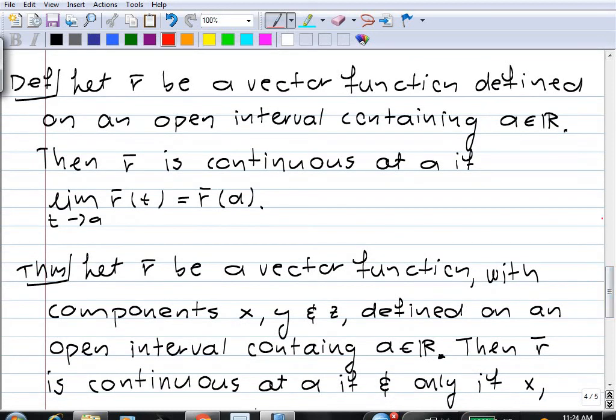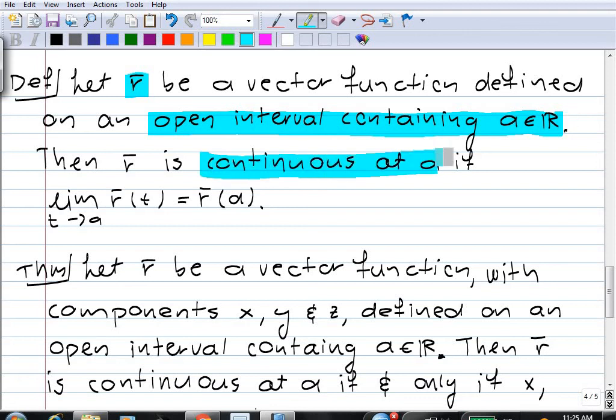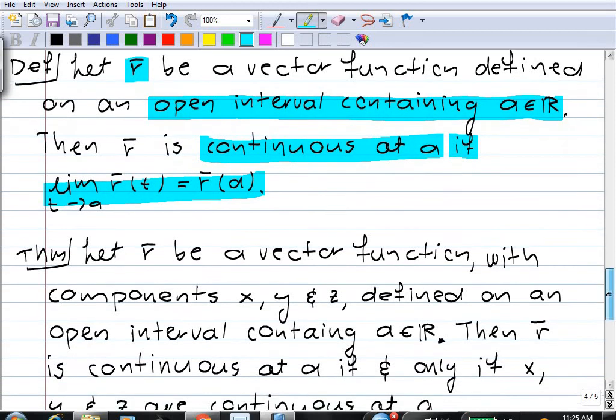So, of course, once you've defined limit, the next thing you need to define is continuity. And of course, the definition of continuity for vector functions is exactly the same as the definition for continuity of functions from R to R. A vector function r, defined on an open interval containing a, and now it must also be defined at a, is continuous at a if limit t goes to a of r(t) is r(a). That's the normal definition of continuity. And using our theorem that relates the limit of the vector function r to the limit of its components, we now get immediately the following result.